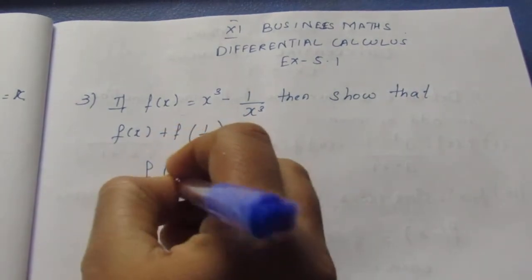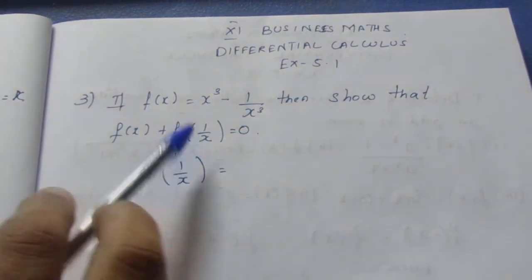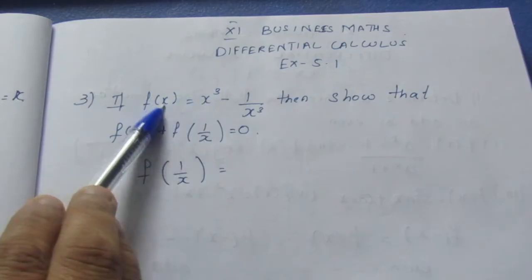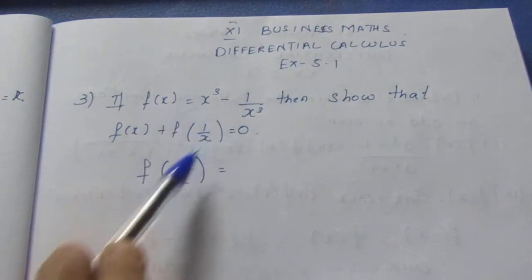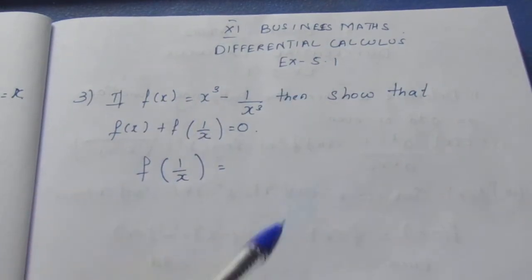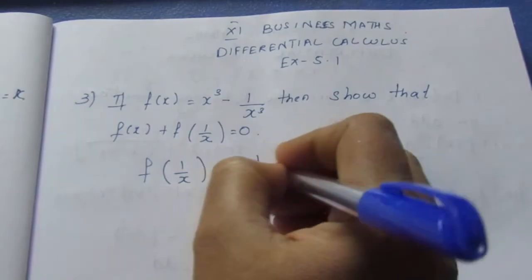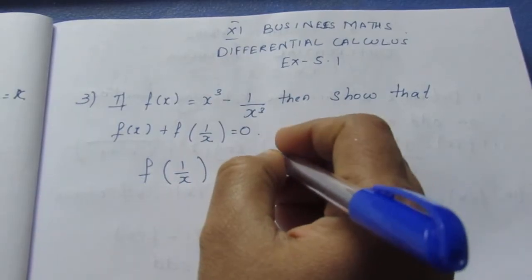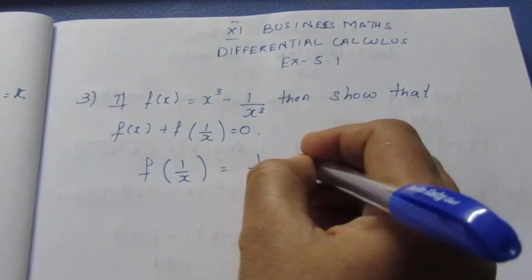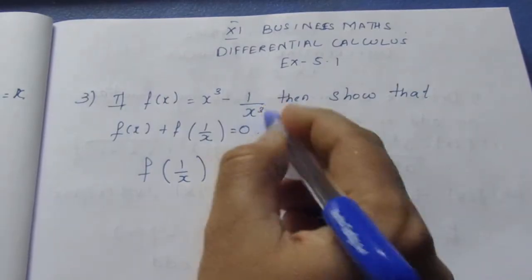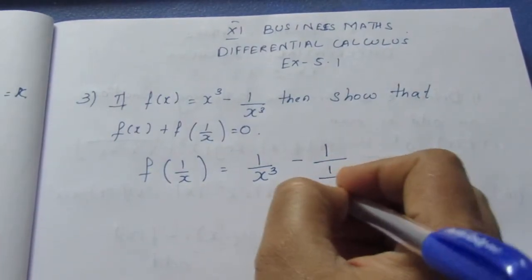So, f of 1 by x: substituting 1 by x in place of x, we get 1 by x cube minus 1 by 1 by x cube.